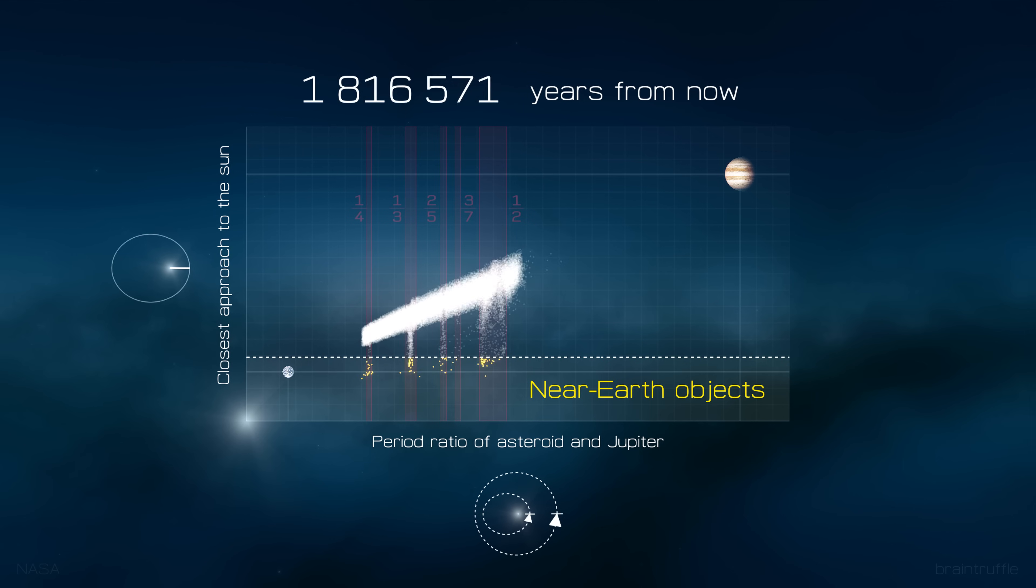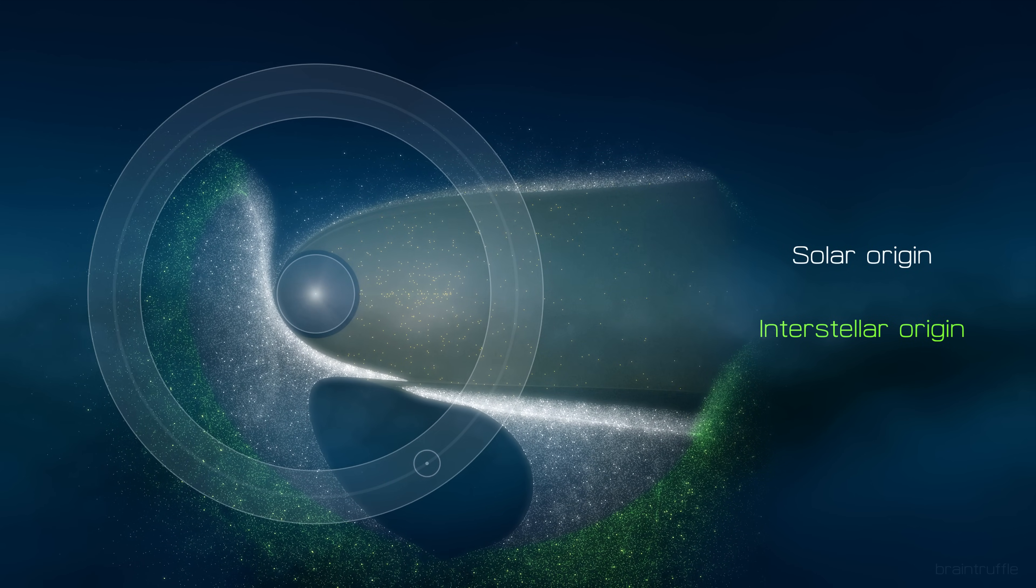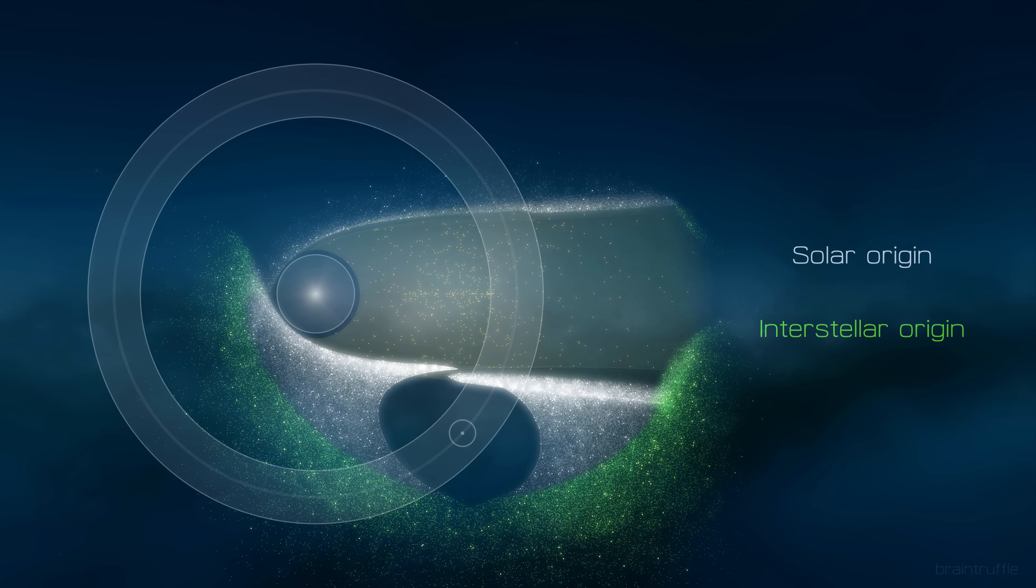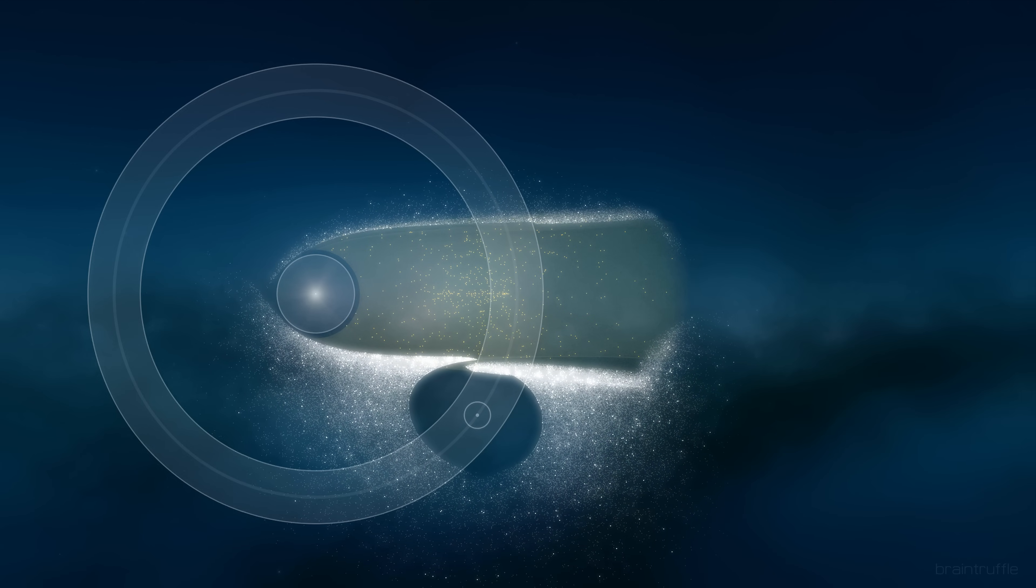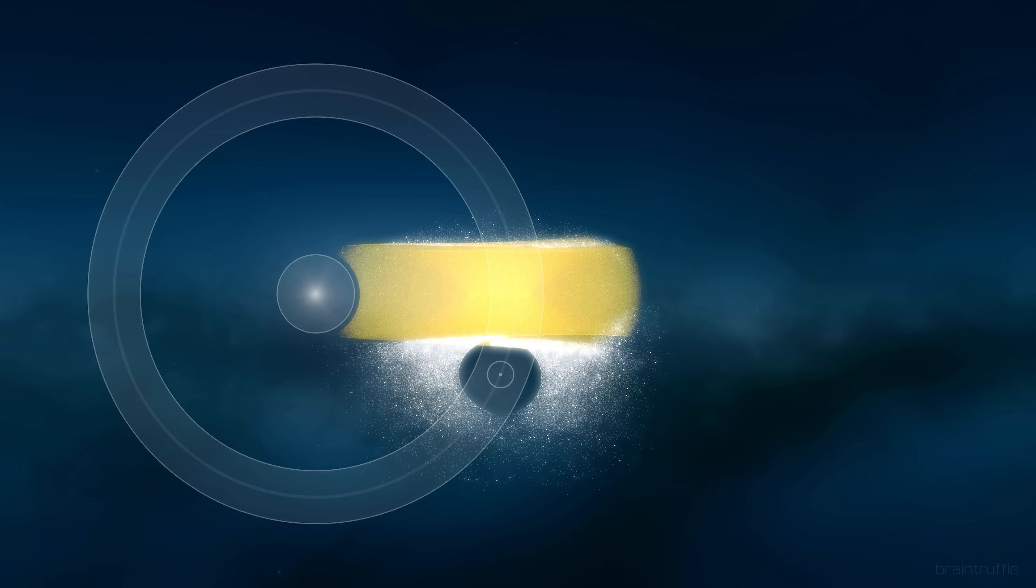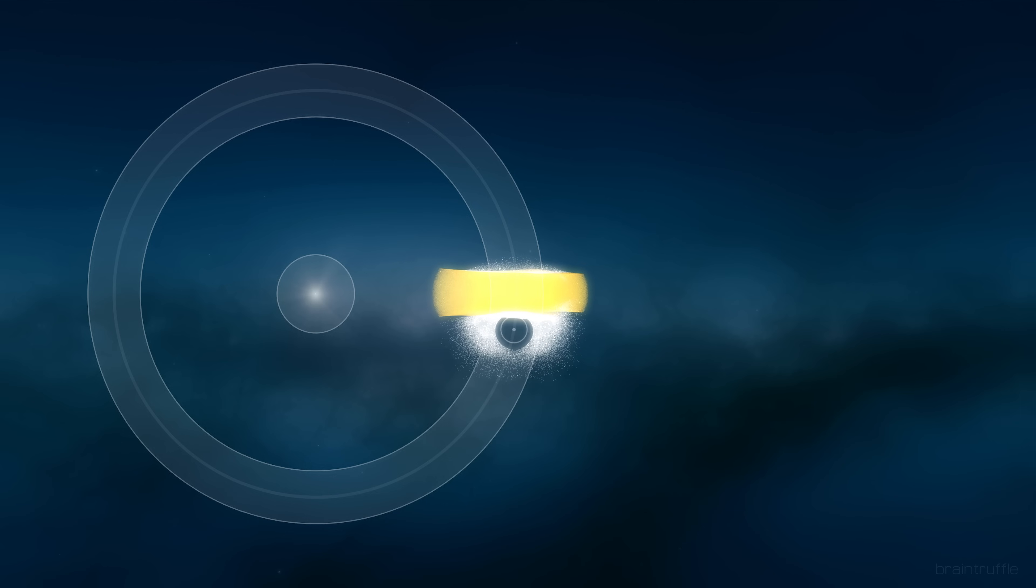But in our solar system, there are more short-time interactions to watch out for. Interactions that keep sending new objects to us. We have seen these objects reaching us from interstellar space and the outmost regions of the solar system. And we have seen how Jupiter changes their orbits in a very short interaction time, making them into Earth crossers.